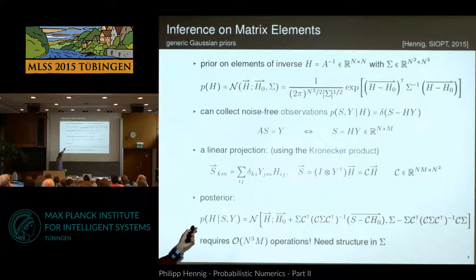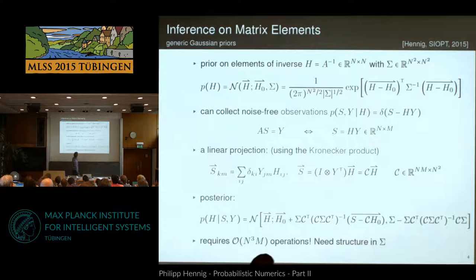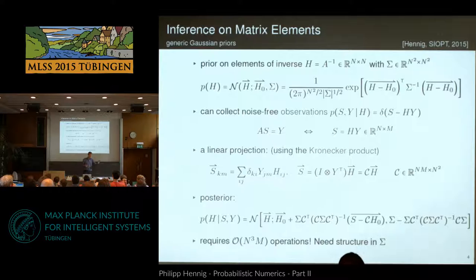The covariance matrix sigma describes how we think numbers at location ij co-vary with elements at location kl, so it must be of size n-squared by n-squared — a very large matrix. We can write down this distribution, and then think about what we can compute. The most efficient operation computers can do is multiply this matrix A with a vector or matrix S. So we multiply A with a long and skinny matrix S of size n by m, getting back a vector Y. Because A is invertible, we can also write S equals H times Y, which is a linear observation of H. Gaussians are closed under linear projections, so we can condition on these observations and get a Gaussian posterior.